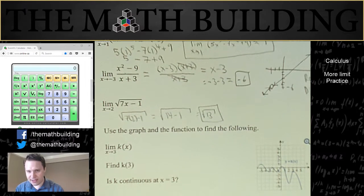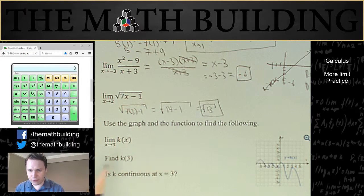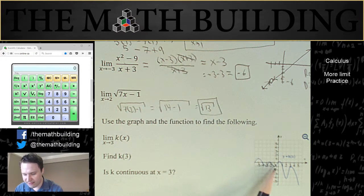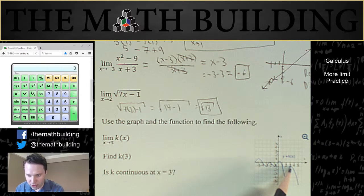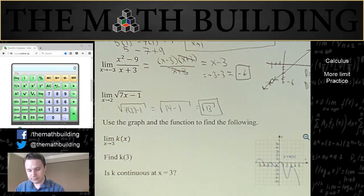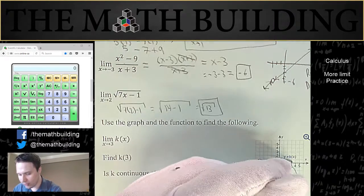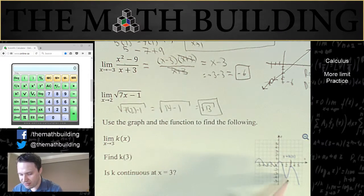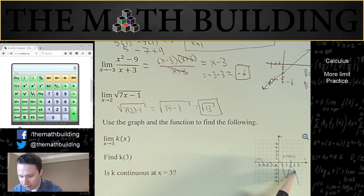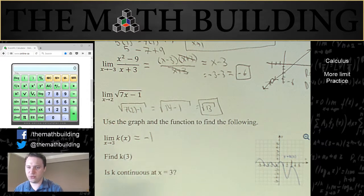All right, last problem in this video. Use the graph and the function to find the following. So here we've got this k of x function, which is bouncing all over the place. And I notice that we have a little hole right there on the graph, another removable discontinuity. What is the limit as x approaches 3? Well, here's 3 right here. Based on the graph, it appears that we're approaching the same thing from either direction. So I'm going to say that the answer to that is negative 1 because that's the y value right there.